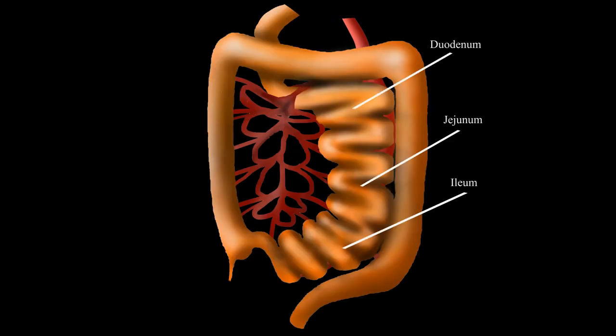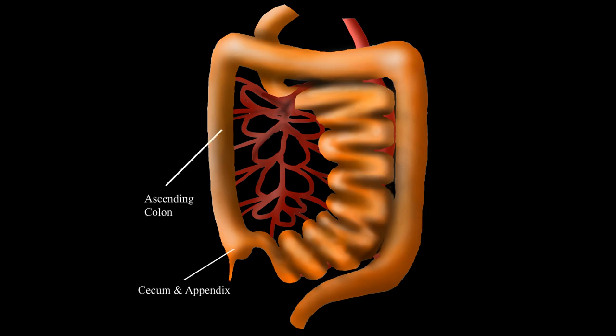The duodenum, jejunum, and ilium are now inside the borders of the entire colon, which is composed of an ascending part, a transverse part, a descending part, and a sigmoid part.